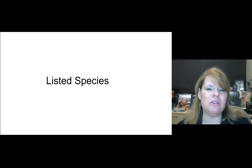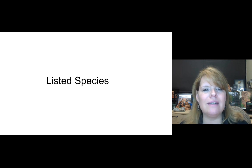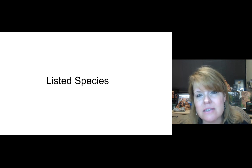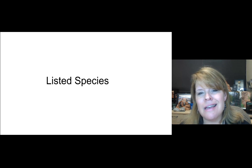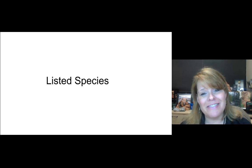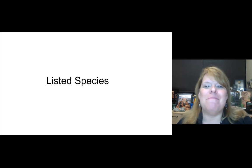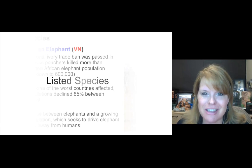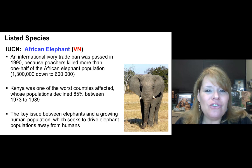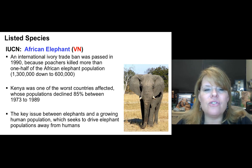Now let's look at some listed species — first a few internationally listed on the Red List, then domestically listed under the Endangered Species Act. Make sure you know the listing status and abbreviations. The IUCN Red List designates organisms worldwide that are threatened, vulnerable, or endangered.